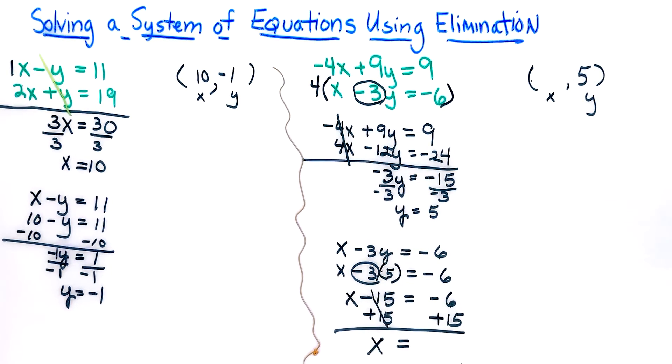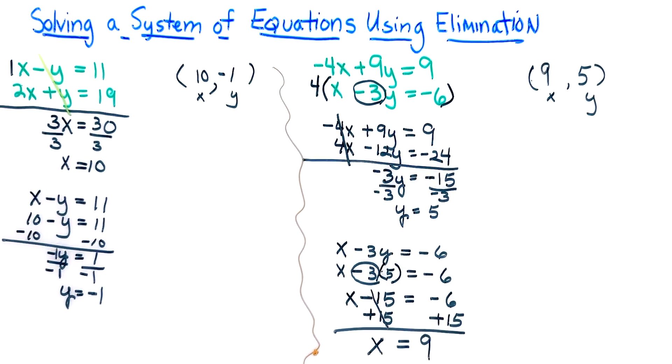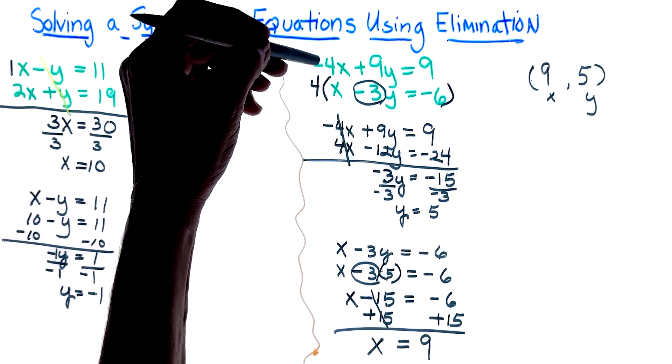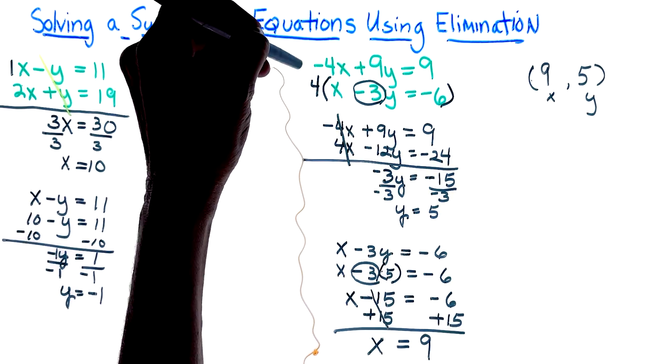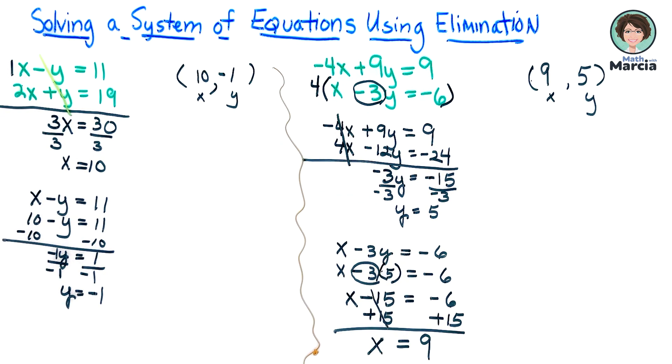Negative 6 plus 15 is 9. So our ordered pair that makes this system of equations, each of the equations true on its own, is when x is 9 and y is 5.